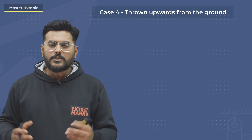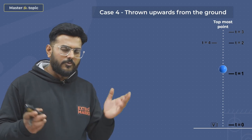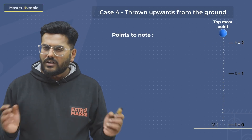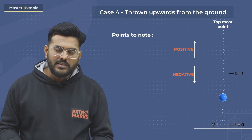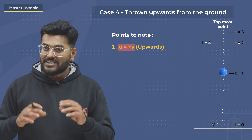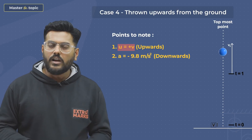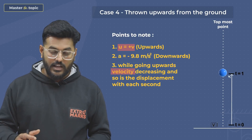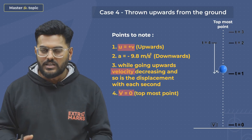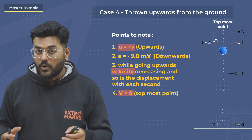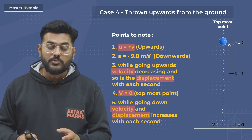Case 4: we are on the ground throwing a ball upward — a very common scenario. Using the same sign convention of downward as negative and upward as positive, the initial velocity is plus V. The ball experiences acceleration due to gravity in the downward direction. While ascending, its velocity continuously decreases until it reaches maximum height, where velocity momentarily comes to zero. After that, it descends and both velocity and displacement continuously increase every second.